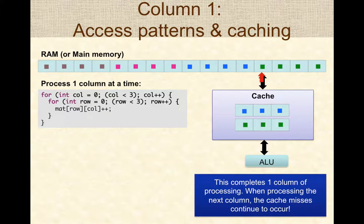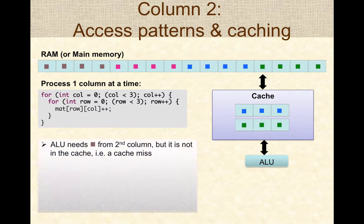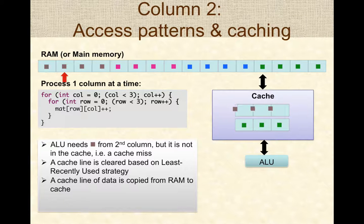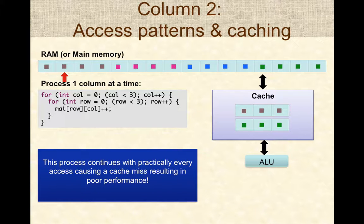Notice that in every iteration of the top-level loop for column zero, every row access results in a cache miss. For example, when accessing the second column back at the first row, the cache is full so one data block based on LRU is copied back to memory, then the data is fetched, and the ALU uses it. Every step results in a cache miss, resulting in very poor performance of a column-major access pattern because the matrix is stored row-major in memory.